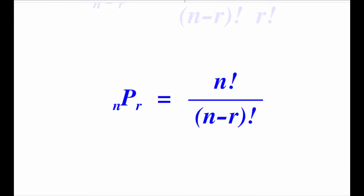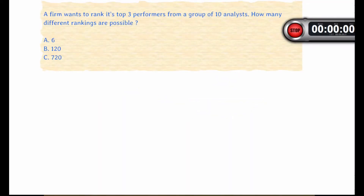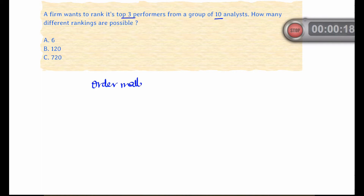Let's look at a couple of examples that will help clarify these points. A firm wants to rank its top three performers from a group of 10 analysts. You're trying to select a group of three from 10. The question you have to ask yourself is: does order matter? Now obviously in this case, because it's a ranking, order does matter.